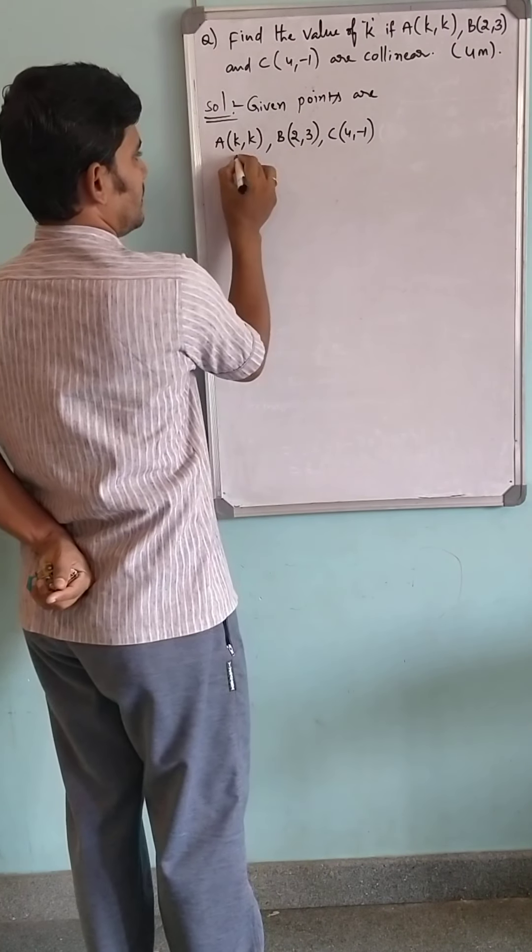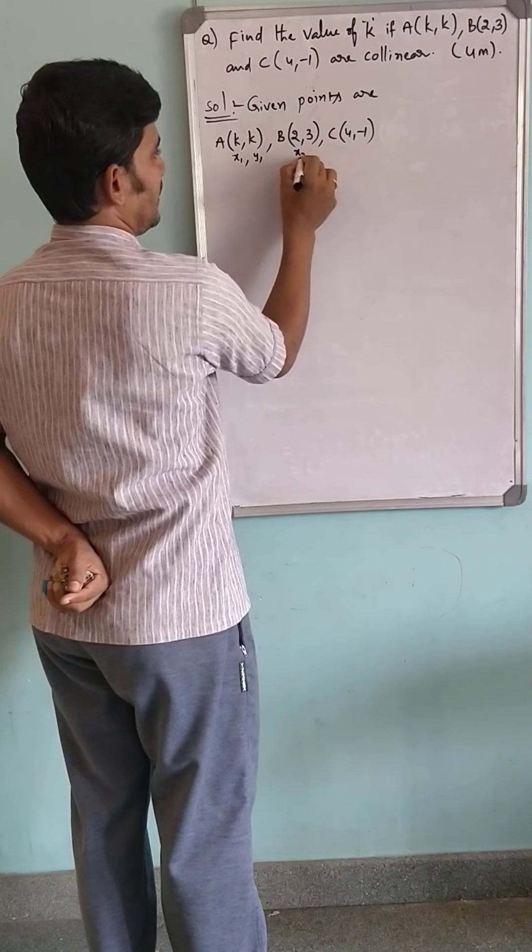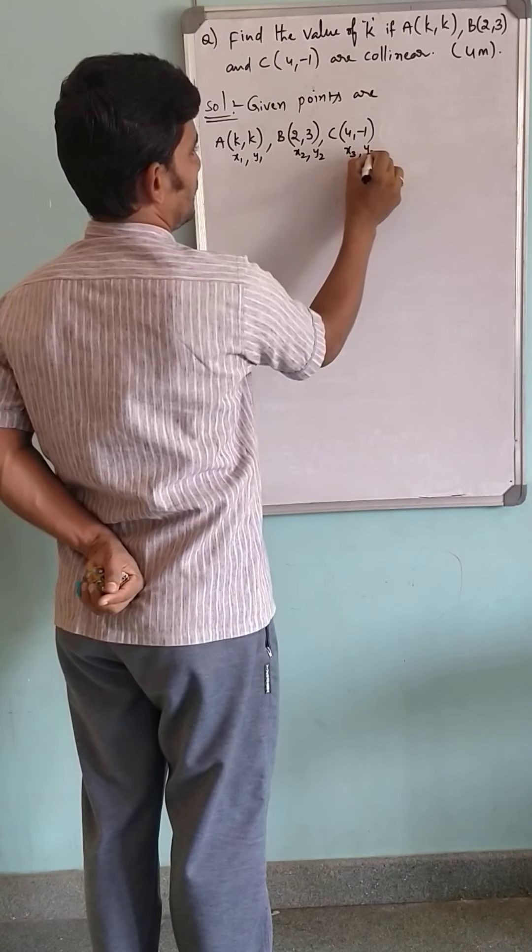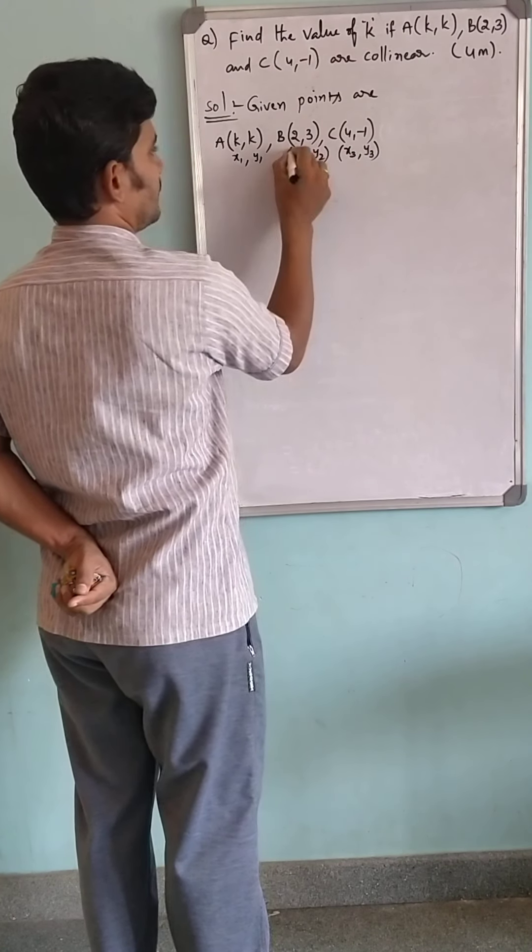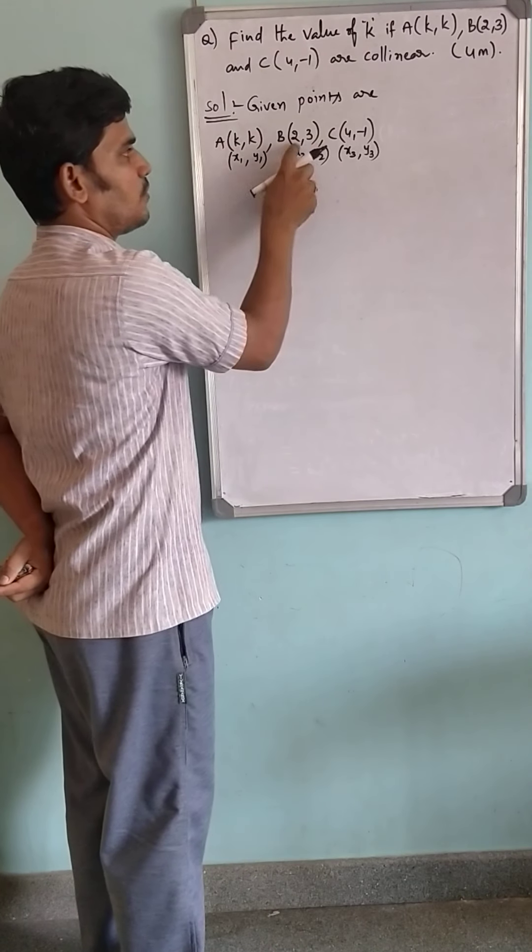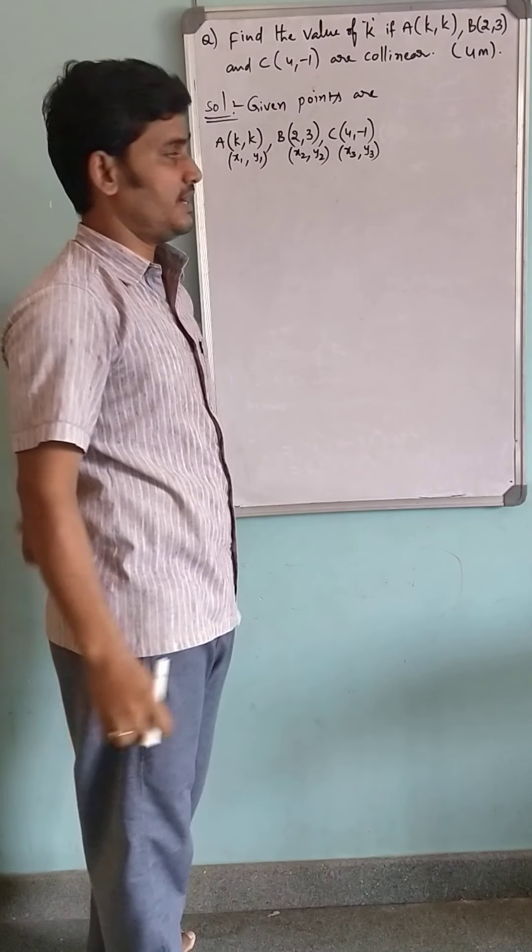That is, this is X1, Y1, X2, Y2, X3, Y3. As you know, the first coordinates are X-coordinates and the second coordinates are Y-coordinates.